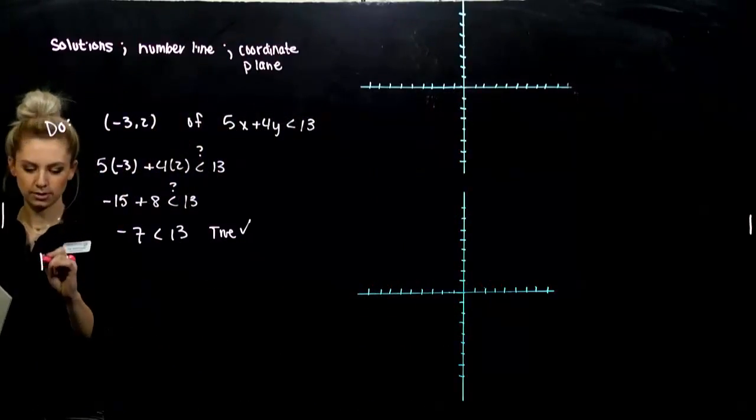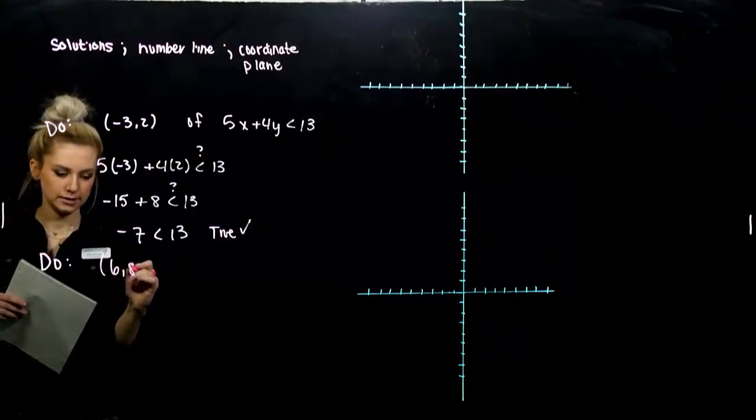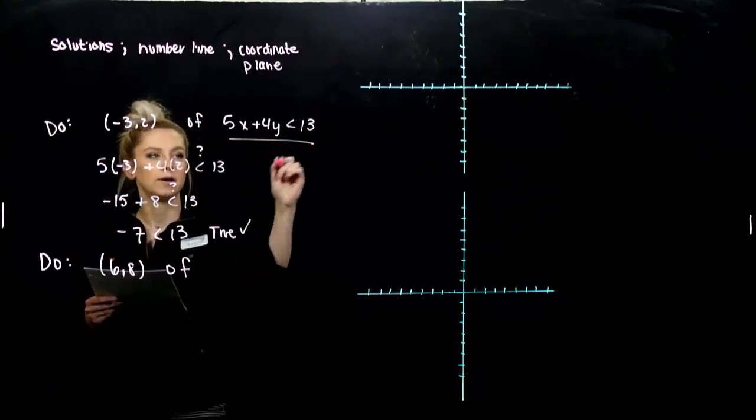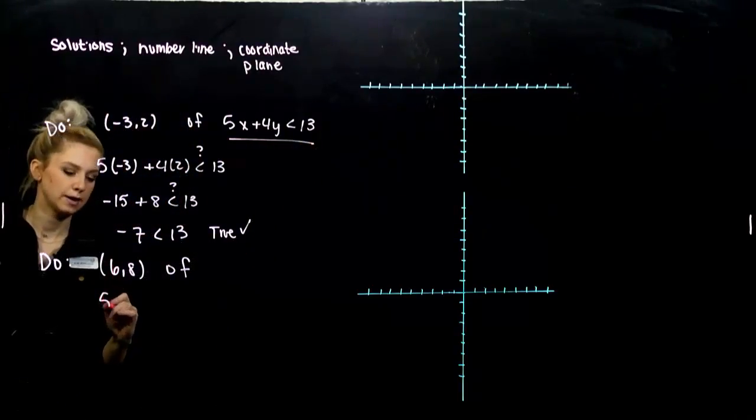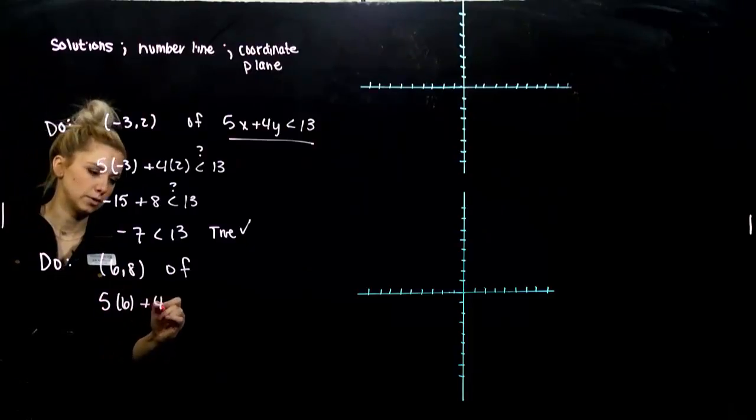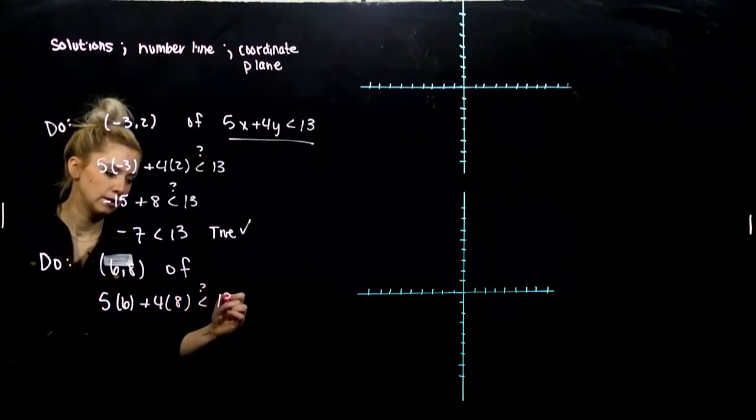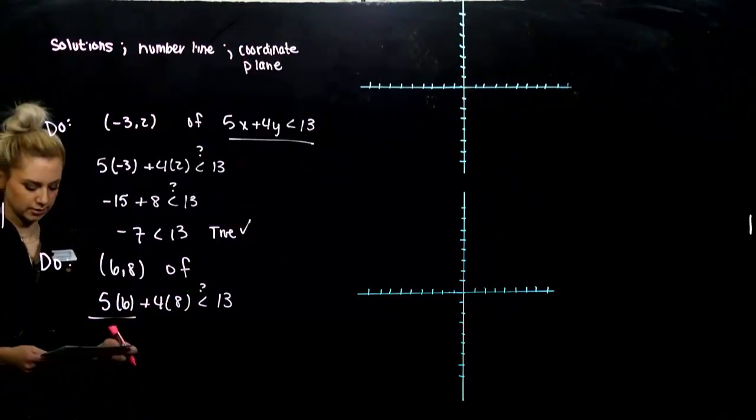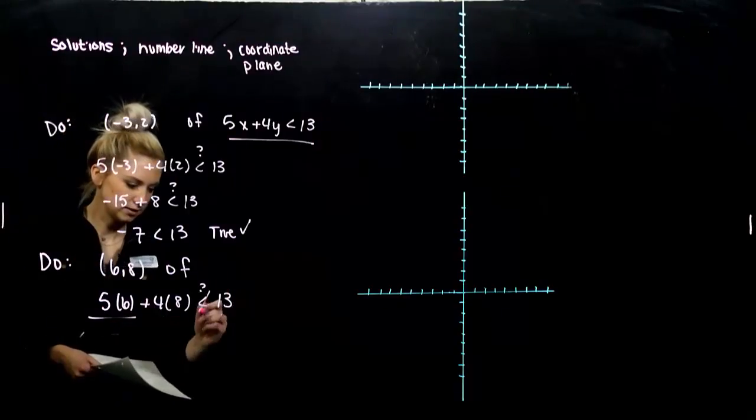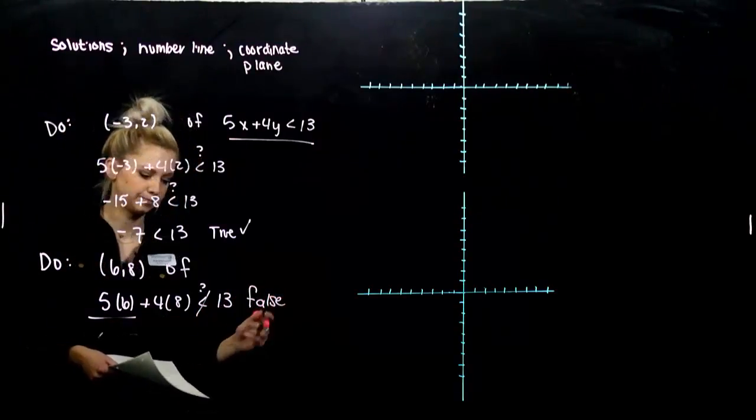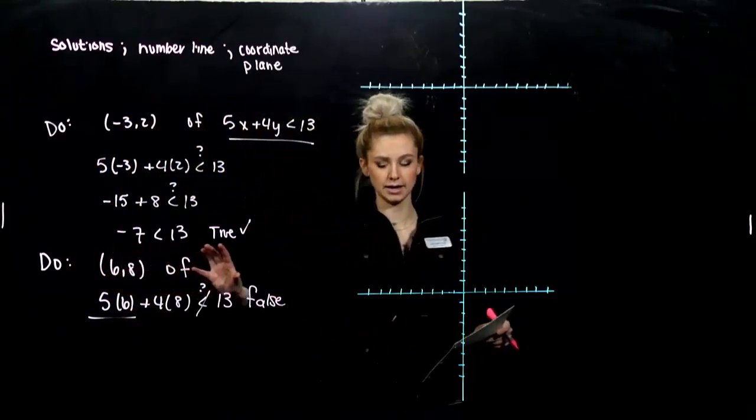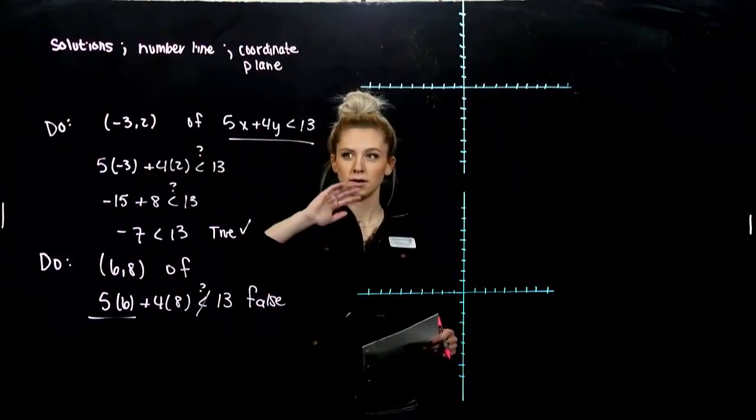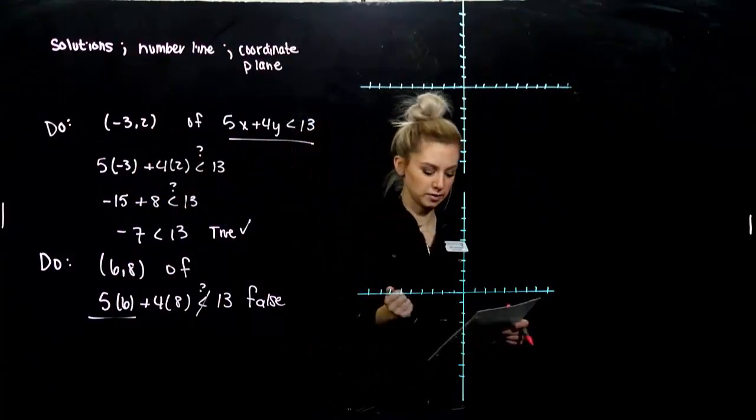Next one we're going to look at just to show a case where it's not true. 6, 8 is not a solution of this same inequality. So let's see. 5 times 6 plus 4 times 8 is not less than 13. We can already see, just from this chunk, it's already larger than 13. So no, it's not. This is false. So this point is not going to lie in the solution set of that inequality, but this one will. Whether it be really close to the line, really far away, somewhere in the plane of these solutions.